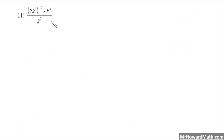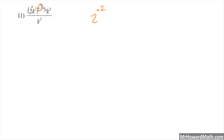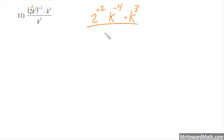We have an additional example — this would be number 11 for students in my class. The first thing I'm going to do is simplify this section. I need to bring this negative 2 exponent that's outside the parentheses inside to all the exponents inside. Outside times inside, we multiply exponents. So I get 2 to the negative 2 power — because there's an implied first power, and I multiply that by negative 2. Then k to the negative 4 power — that's 2 times negative 2 — multiplied by k cubed, all over k squared.